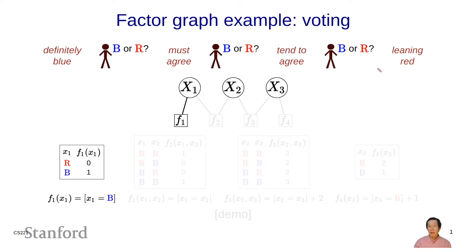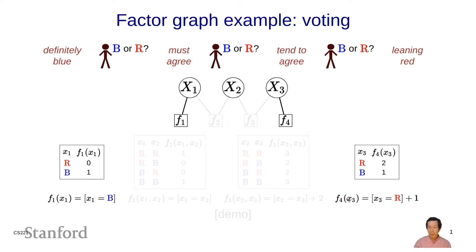Now let's look at leaning red. This factor is f4, and it also corresponds to a table: for every possible value of x3, r returns 2 and b returns 1. Mathematically, f4 equals the indicator function of x3 equals r, plus a smoothing constant of 1. The indicator returns 1 or 0, so adding 1 offsets that to 2 or 1. Intuitively, you can think of this as person three preferring red roughly twice as much.